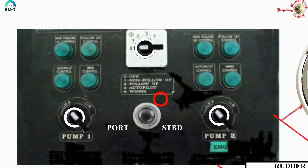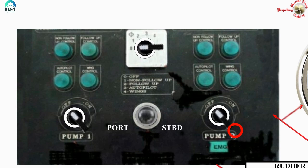In modern ships it's all electronic with a highly sophisticated autopilot - an electronic display with screens, lots of settings and buttons, quite complicated. But let us focus on this very simple control panel, which is very good for understanding the basic concept. That is why I chose this control panel for our demonstration. You can see: non-follow-up is position one, follow-up is position two.